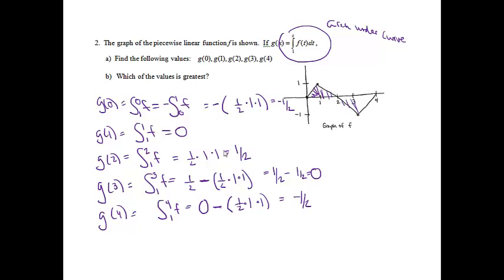For part b, which of the values is the greatest? 1/2 was the greatest, and that was occurring at g of 2.